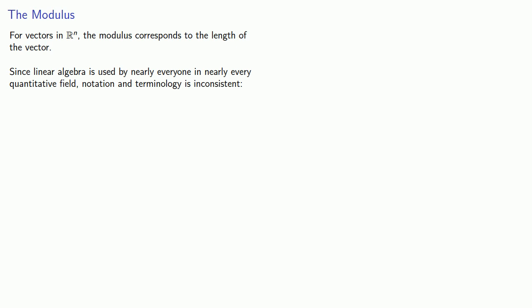So the modulus might also be called the 2 norm of a vector. And you might wonder if it's called a 2 norm, is there a 1 norm, a 3 norm, a 17 norm? And the answer is yes. We might also call the modulus the magnitude of the vector.